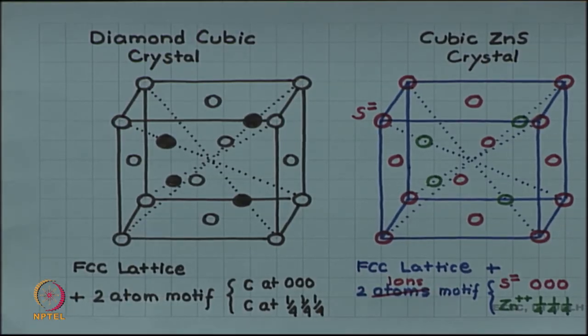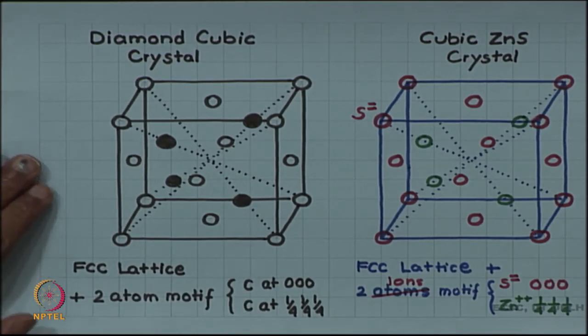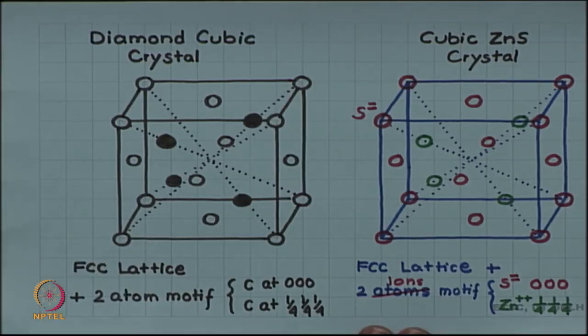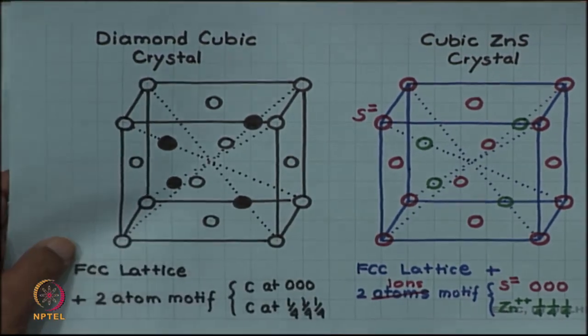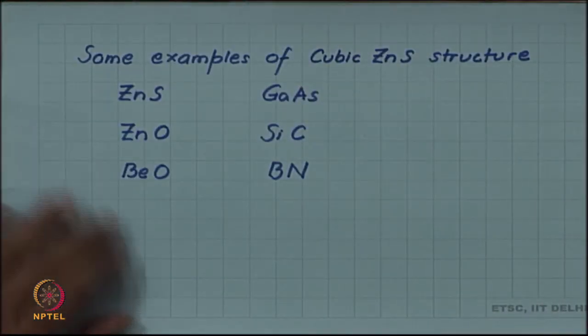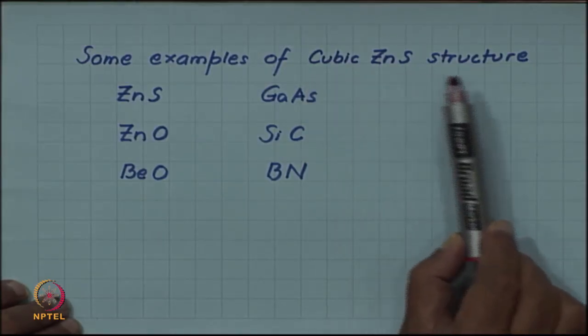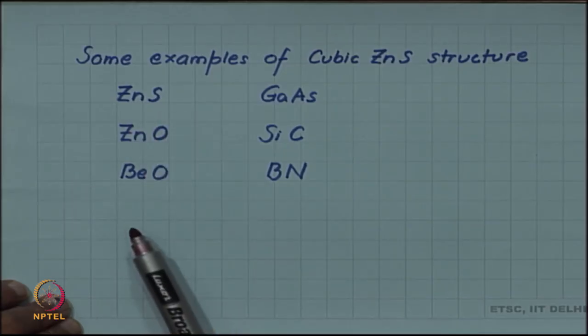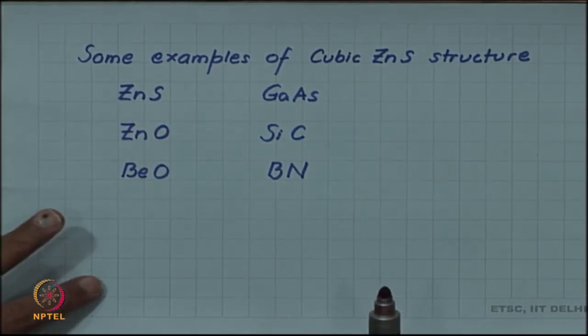These two structures should be considered as different crystal structures despite their similarity. We will have diamond cubic crystal only if both atoms are the same. We will have a zinc sulfide structure if the two atoms are of different type. Like other structures, cubic zinc sulfide is a prototype structure and many other equatomic compounds form cubic zinc sulfide structure.